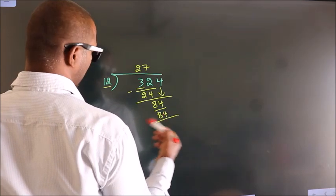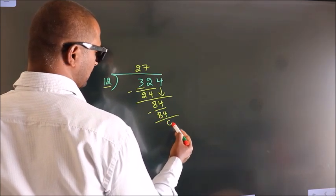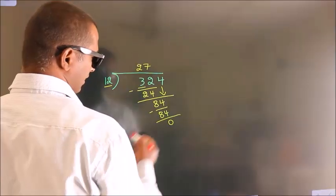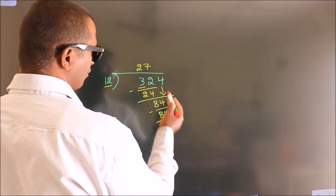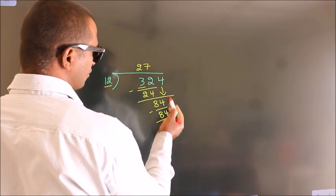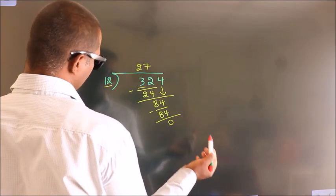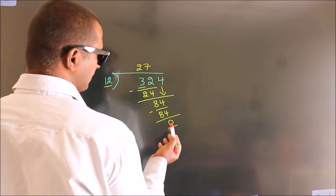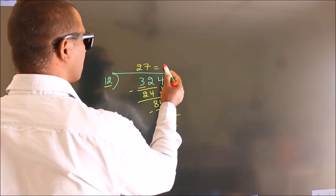Now we subtract. We get 0. After this, no more numbers to bring it down. And we got remainder 0. So this is our quotient.